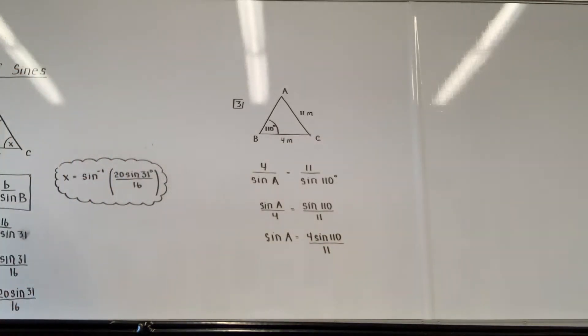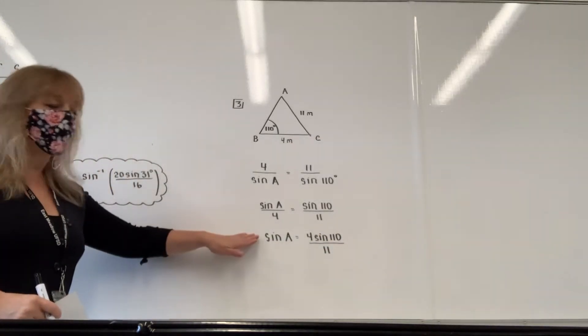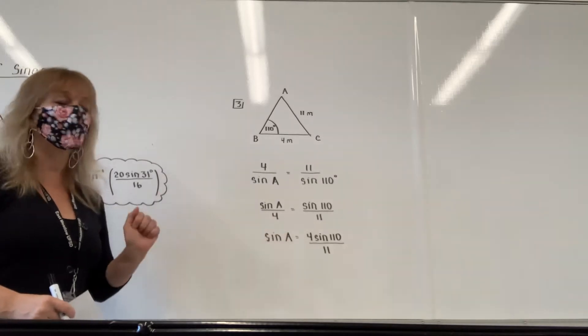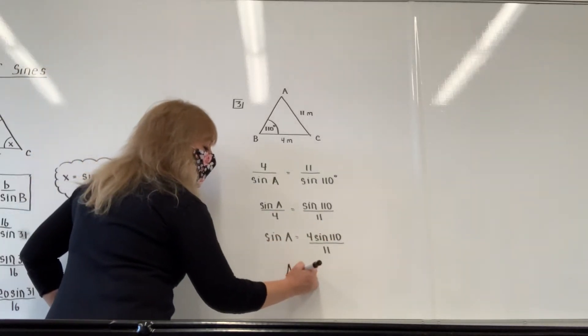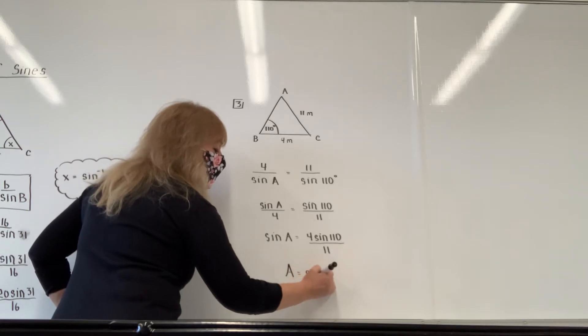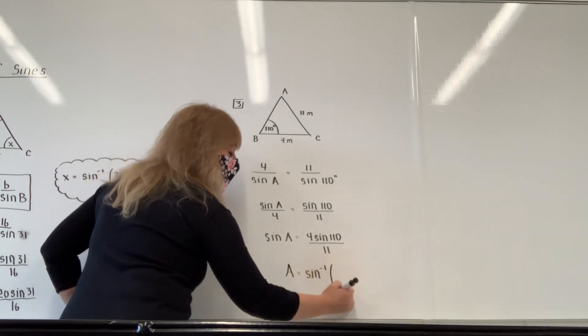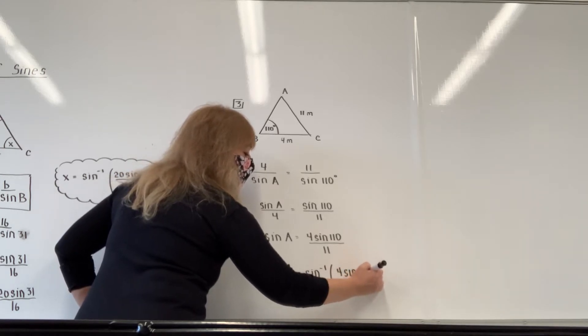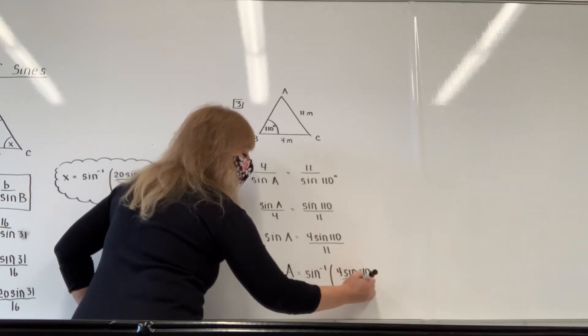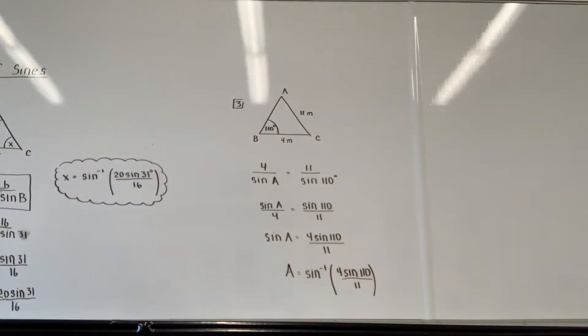And in order for me to solve, I'm not going to write it on both sides. You do the arc sine on the left to cancel out the sine, and you have to do the arc sine on the right. So angle A is the arc sine of 4 sine of 110 all divided by 11. All right, so that's number 3.